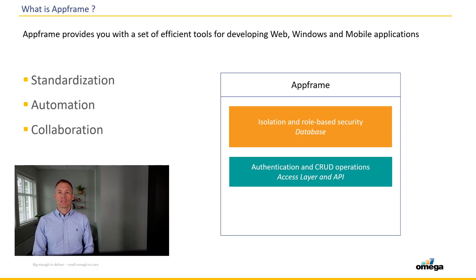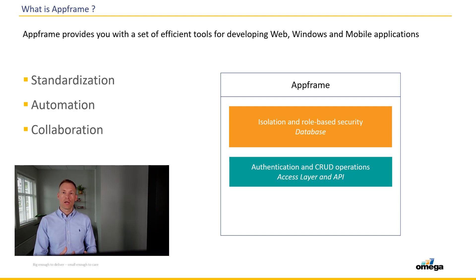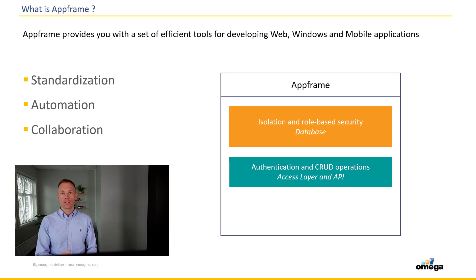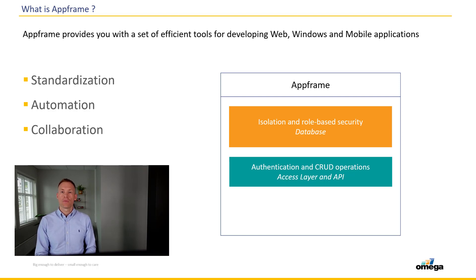The next part in AppFrame is the access layer and the API — authentication and CRUD operations. These are two things you want standardized in an application. We developed default authentication methods supported by default, so whenever you develop a new application you get these authentication methods within it. We support SQL authentication, Windows integrated authentication, Azure Active Directory with Office 365 authentication, Google authentication, and the SAML protocol — meaning you can integrate with any identity provider that supports SAML, keeping the framework future-proof and flexible.